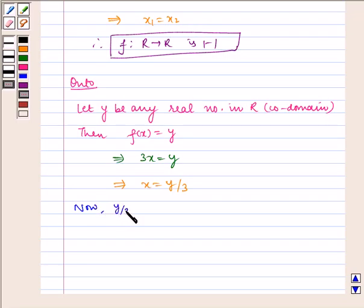Now, y/3 belongs to R for y belongs to R such that f(y/3) = 3(y/3) = y.